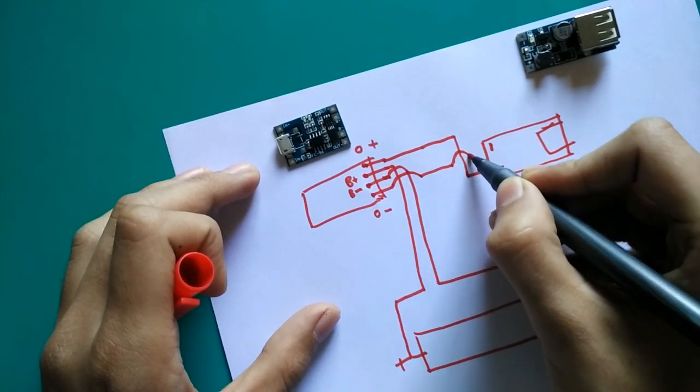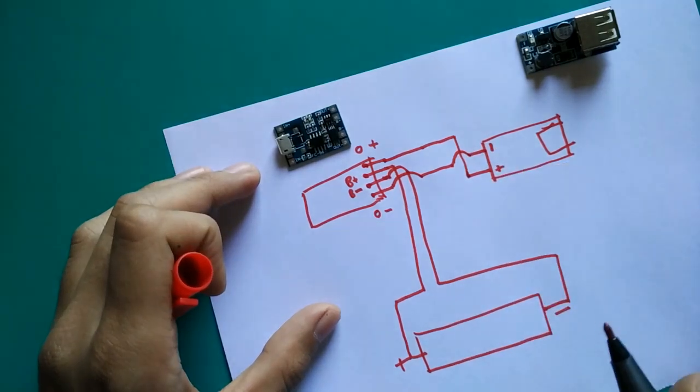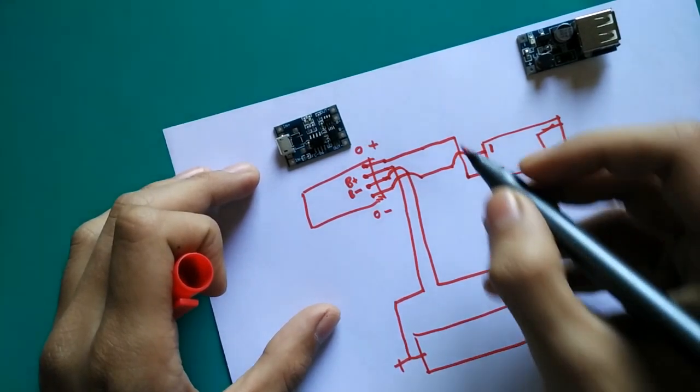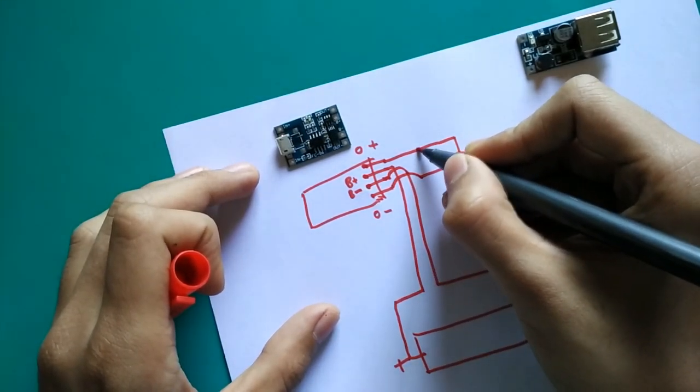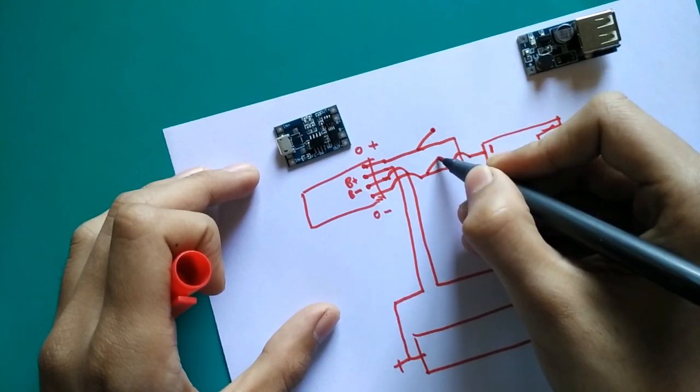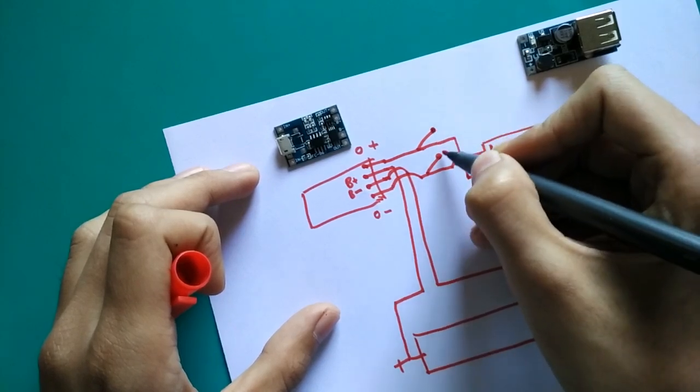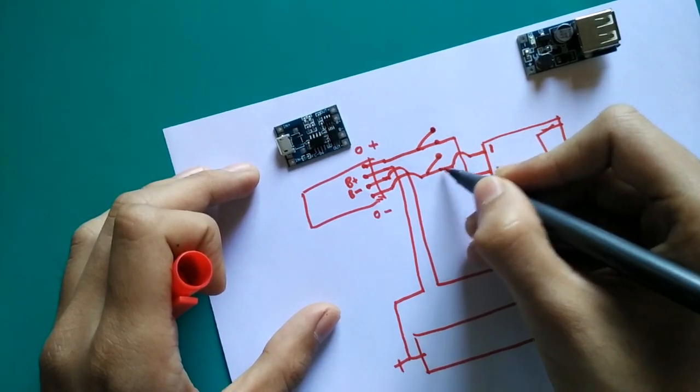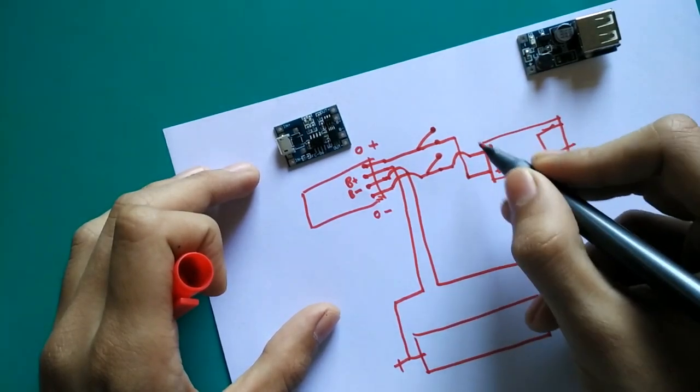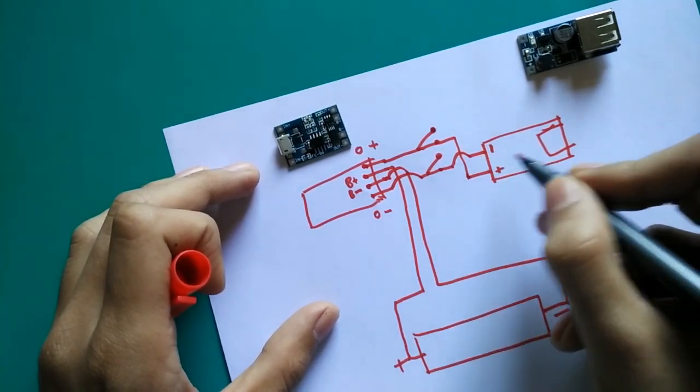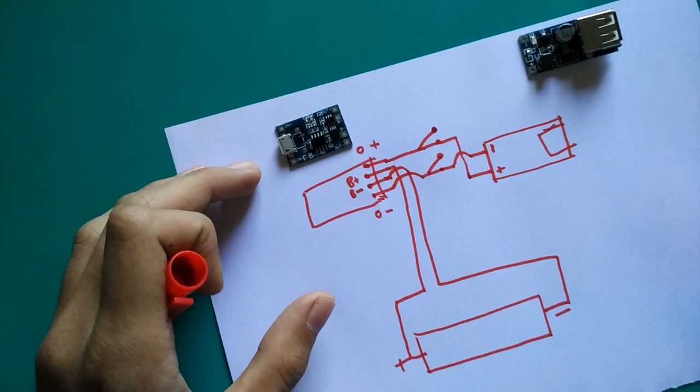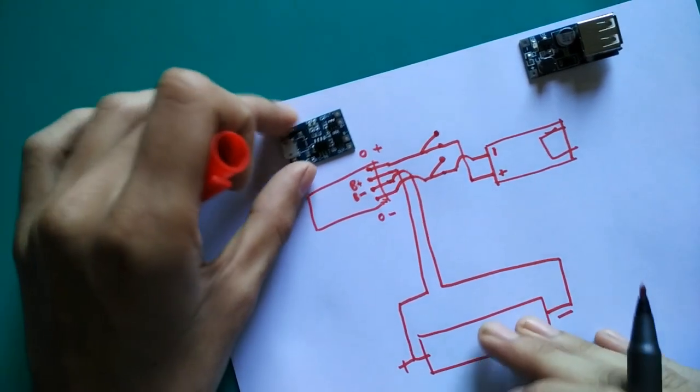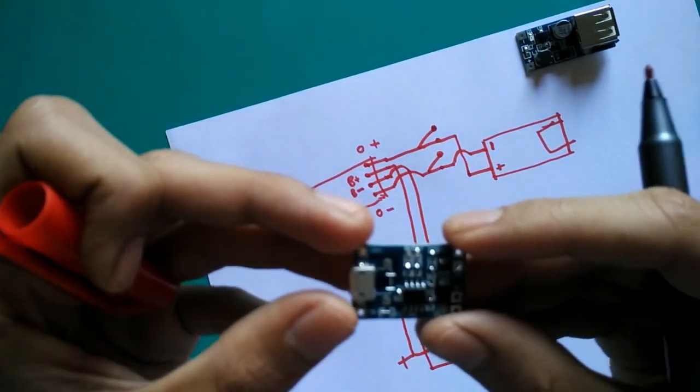So you can also use here one DPDT switch so you can stop the power loss in this charging module while it is not in use. The charging module has one more terminal here - input plus and input minus.